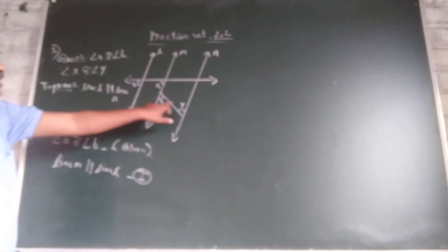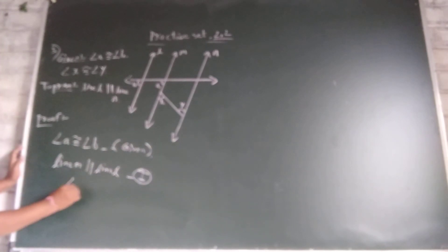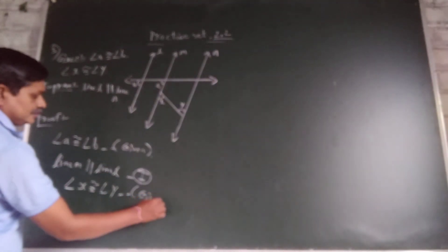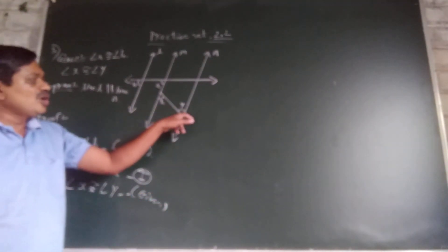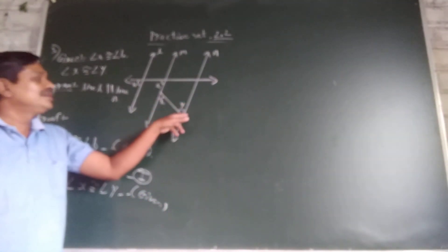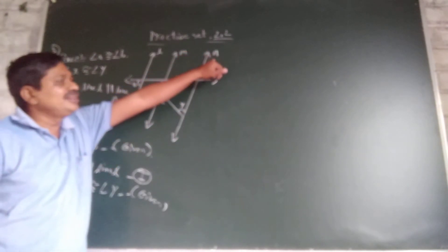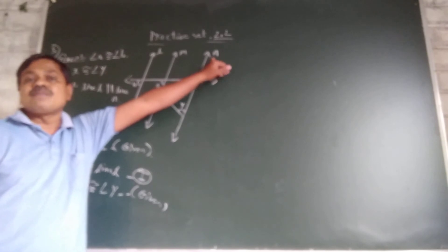Angle X and angle Y are also congruent. These two angles are congruent by alternate angle.